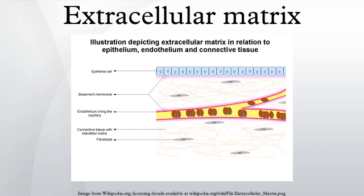Not all ECM devices come from the bladder. Extracellular matrix coming from pig small intestine submucosa is being used to repair atrial septal defects, patent foramen ovale, and inguinal hernia. After one year, 95% of the collagen ECM in these patches is replaced by the normal soft tissue of the heart.